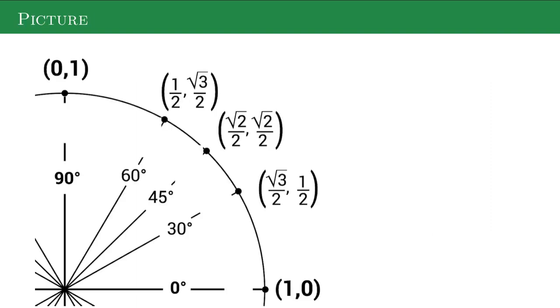All right, so this is quadrant one. We have zero, 30, 45, 60, 90. Those are our special angles. You probably remember those from special right triangles you did in geometry.